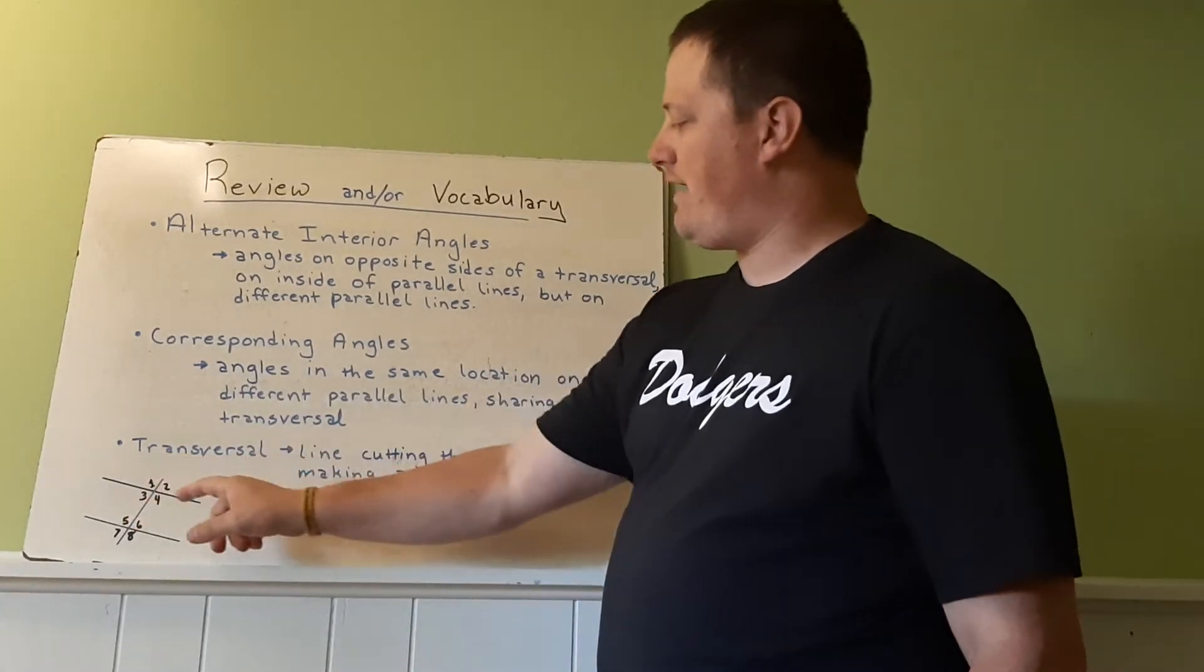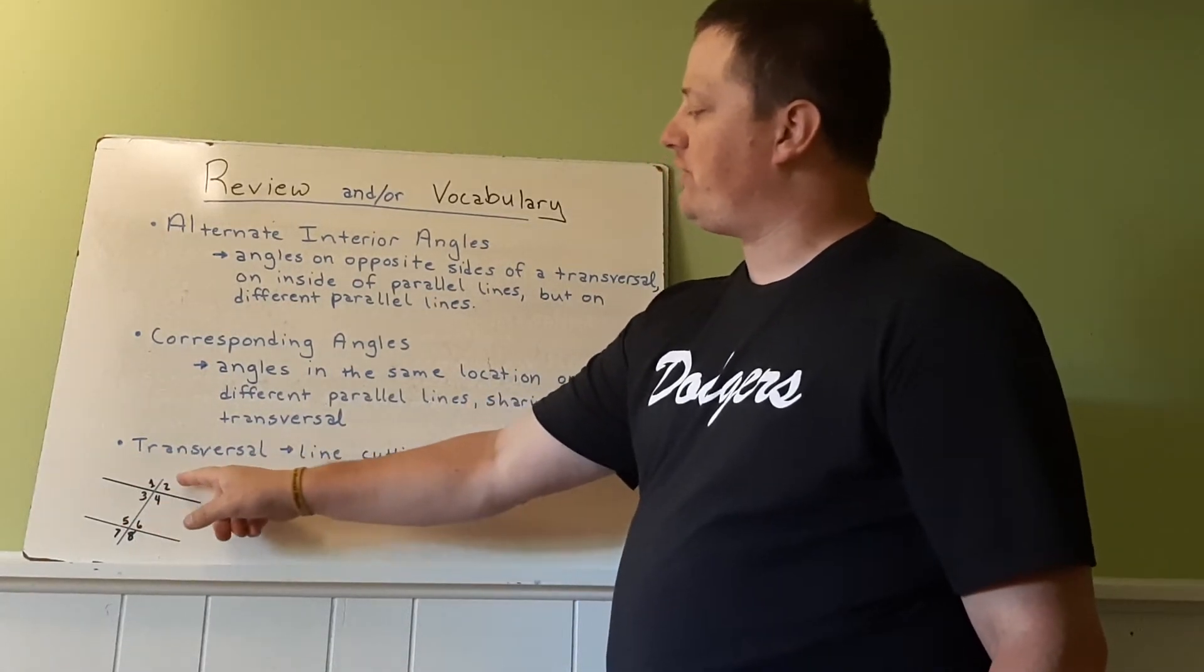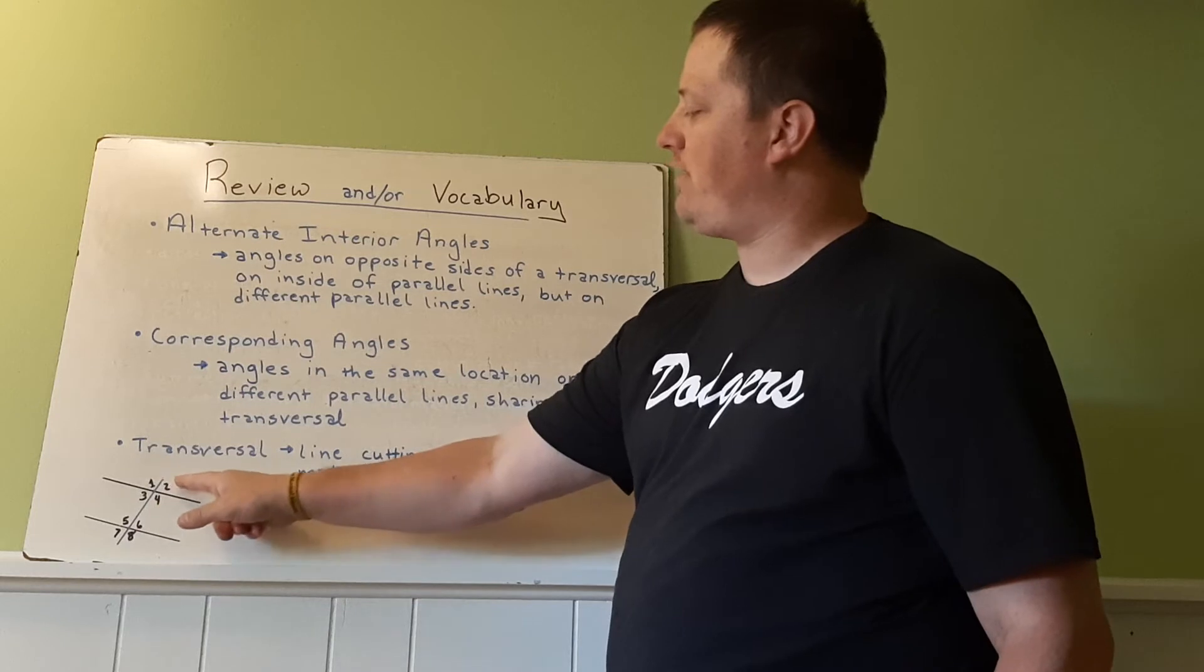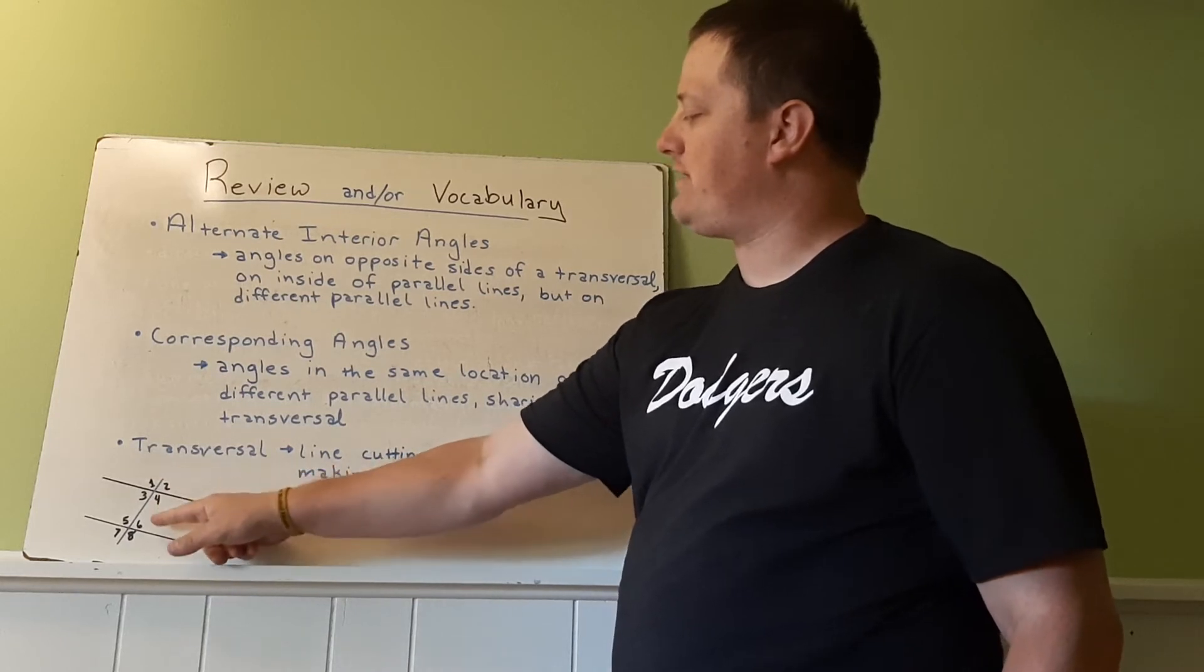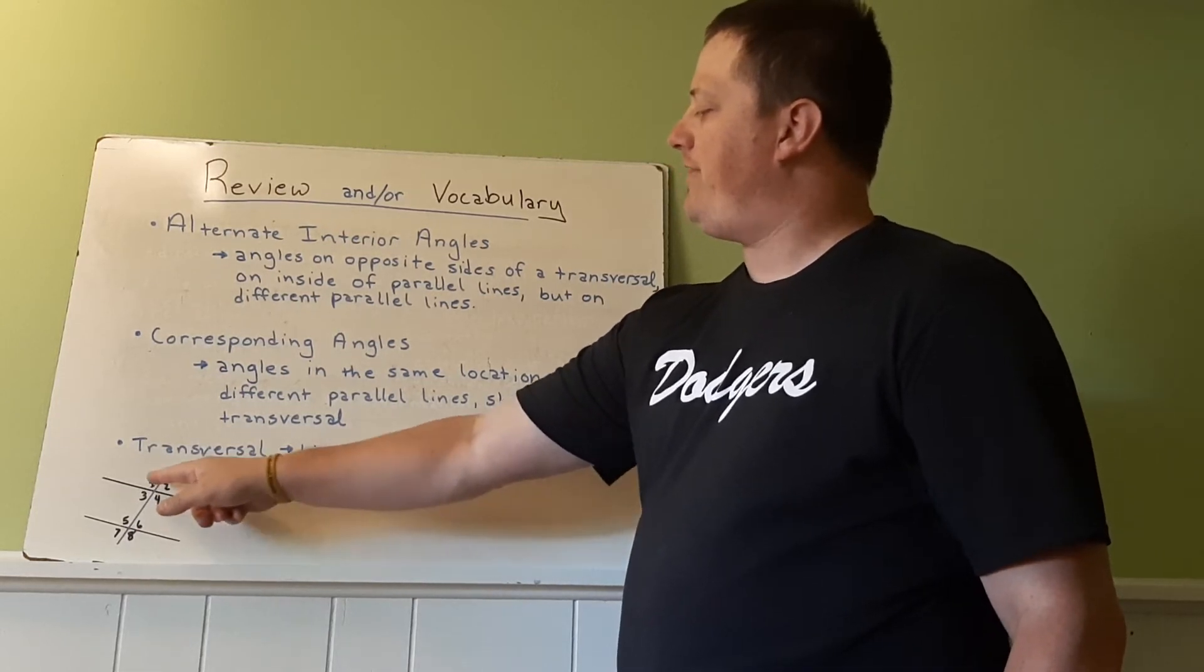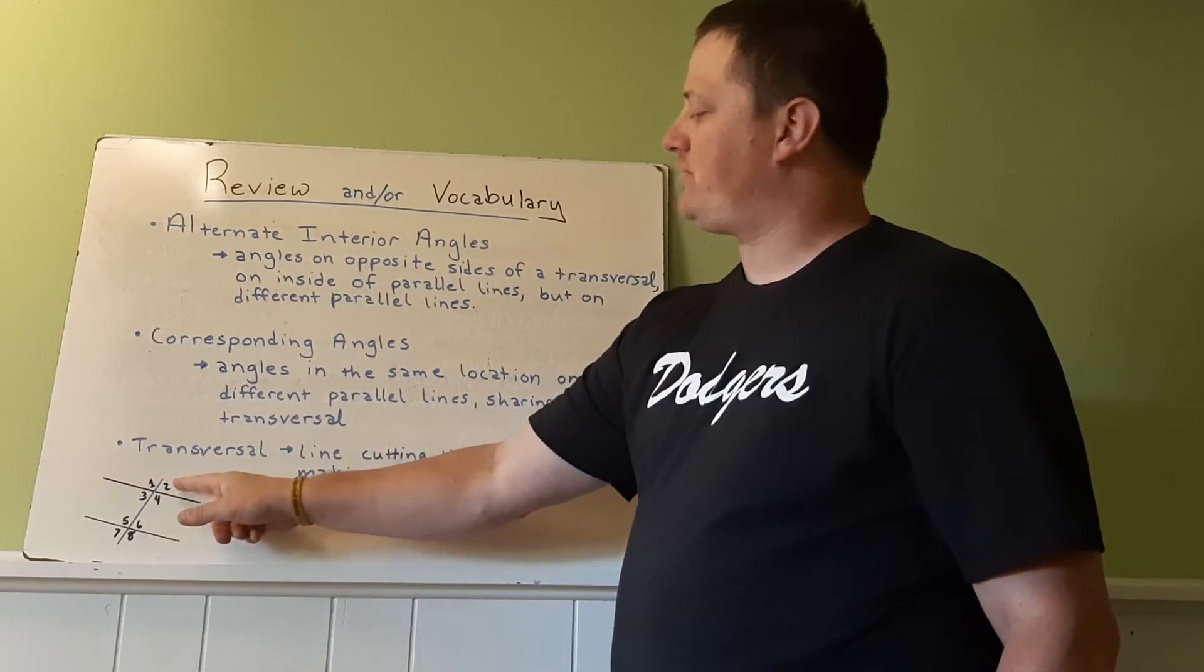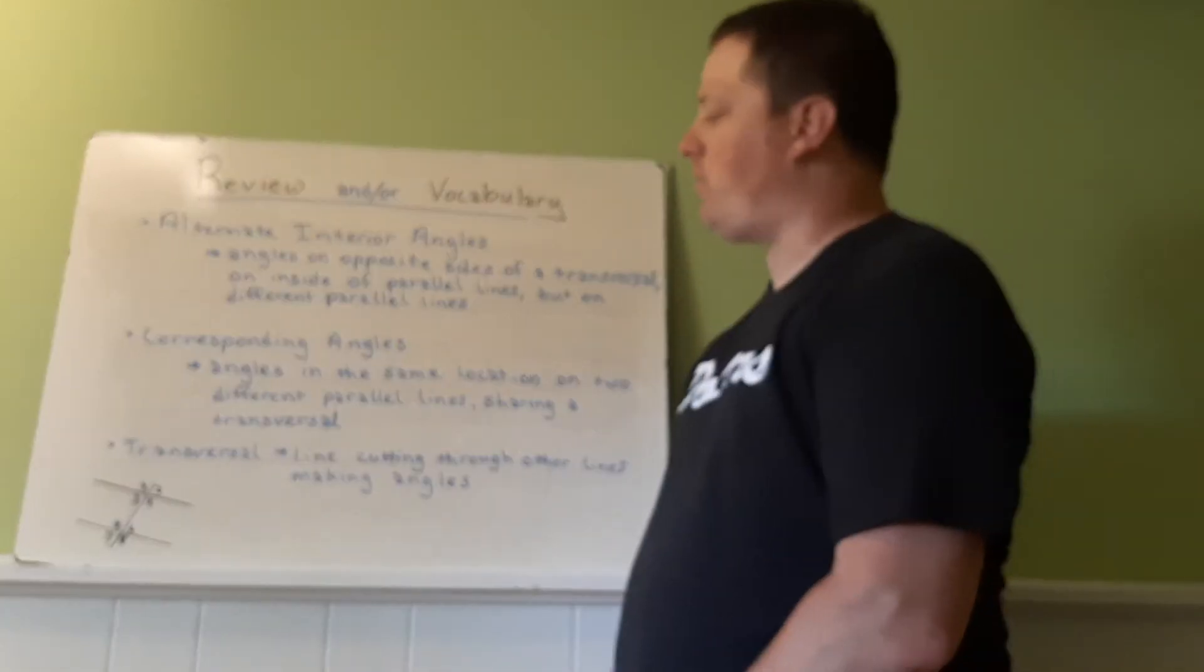So in this look, we again have our parallel lines and our transversals. Two and six are in the exact same spot. Both are on top of the parallels, and they are on the right side of the transversal. So two and six would be considered corresponding.